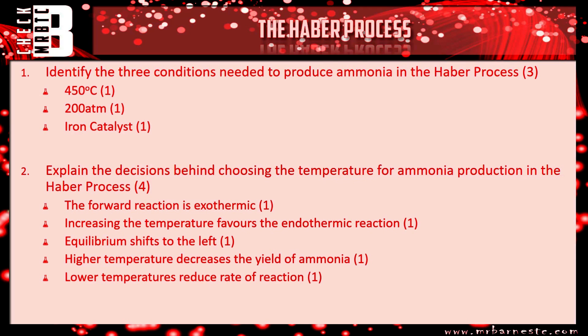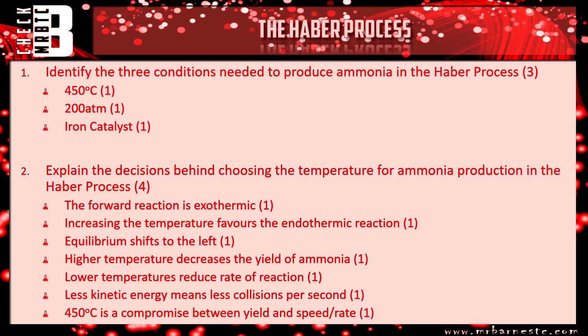There are extra things you could put in: lower temperatures reduce the rate of reaction; less kinetic energy means less collisions per second. And finally, summing up: 450 degrees is a compromise between yield and the speed or rate of reaction. It's quite wordy, so take time to learn those steps — that's how you explain why we use 450 degrees C.